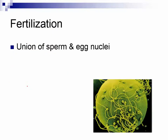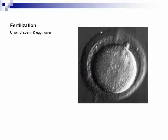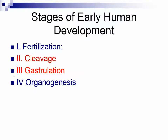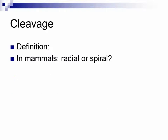Let's go through the stages of early human development. Fertilization is the union of the sperm and egg nuclei — technically fertilization is not complete until the sperm nucleus fuses with the egg nucleus, giving you a diploid zygote and the very first cell of the brand new organism. Cleavage is rapid mitosis without cell growth. In mammals, are we radial or spiral cleavage? Mammals are deuterostomes, just like echinoderms, so our cleavage is radial.